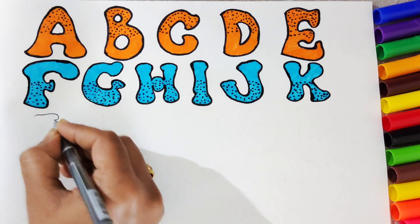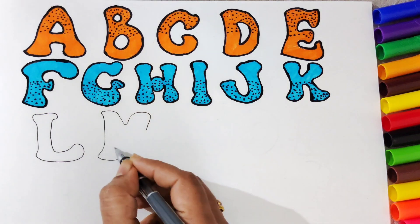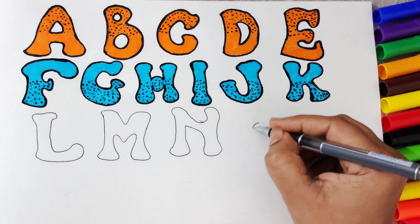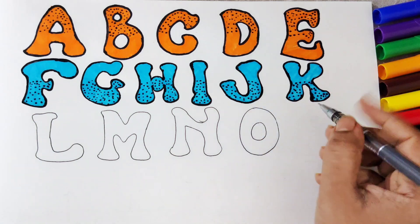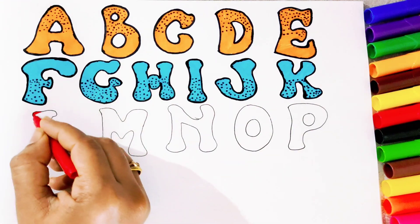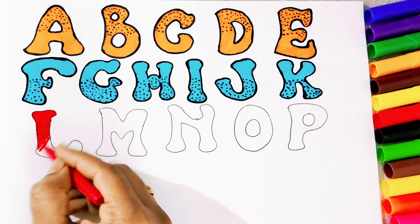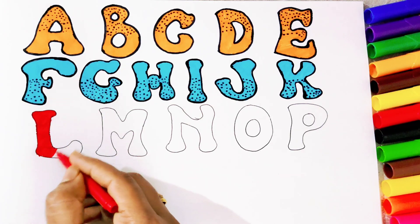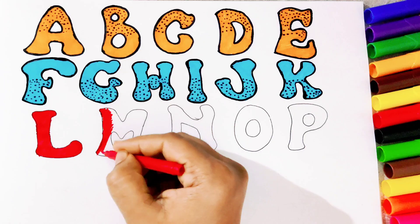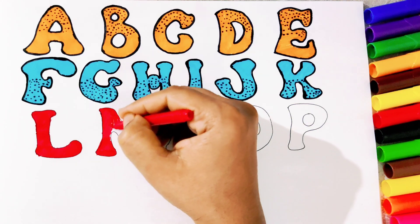Now let's continue to sketch other alphabets. L, M, N, O, P. Now we will fill red color in these five alphabets. Wow, L in red color is looking very nice. Now let's continue filling red color in M. M for monkey and L for lion.